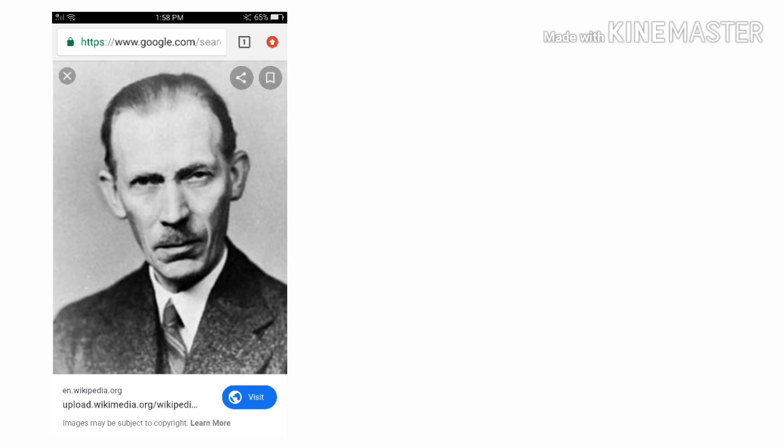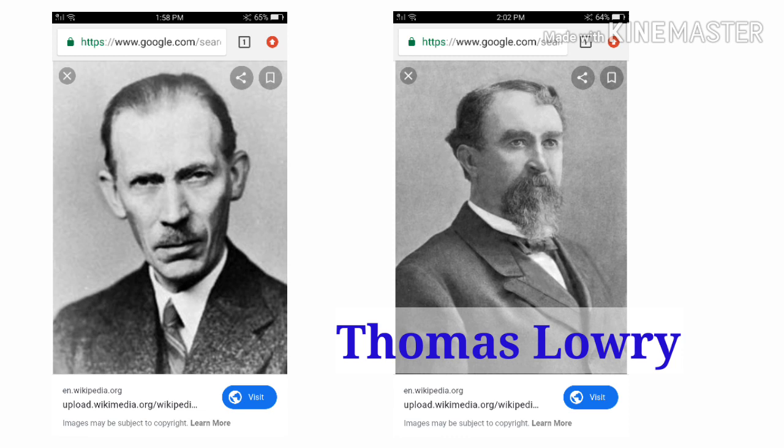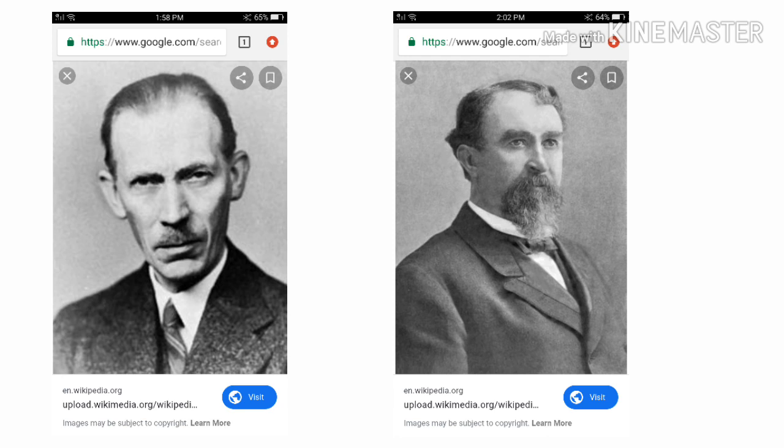To improve the Arrhenius definition of an acid and a base, Johannes Nicolaus Brønsted, a Danish chemist, and Thomas Lowry, a British chemist, each offered a new set of definitions. In the Brønsted-Lowry theory, an acid is any substance that donates a proton to another substance, and a base is any substance that can accept a proton from any other substance.